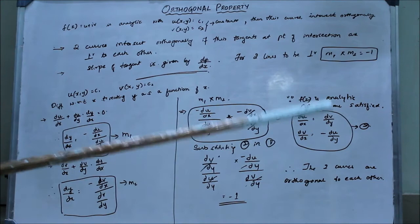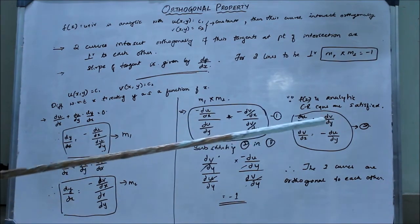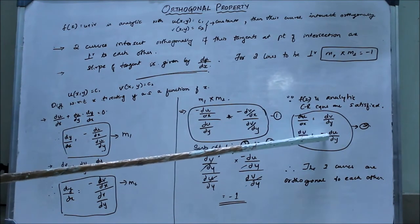I have proved these equations in my previous video. I will leave a link in the description below. We know that through Cauchy-Riemann equations, du/dx equals dv/dy, and dv/dx equals negative of du/dy.